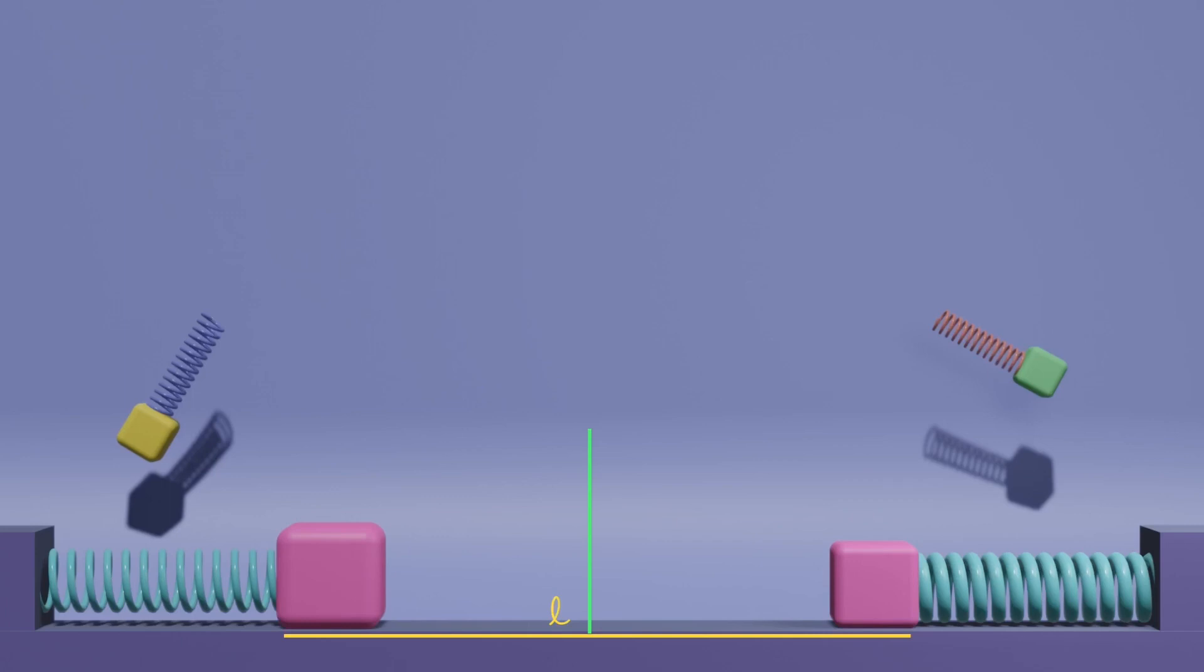As we saw previously, the average speed of this block is greater than this block. When these two blocks collide, they will collide to the left of the center. So if this is the center, they will collide to the left of it.